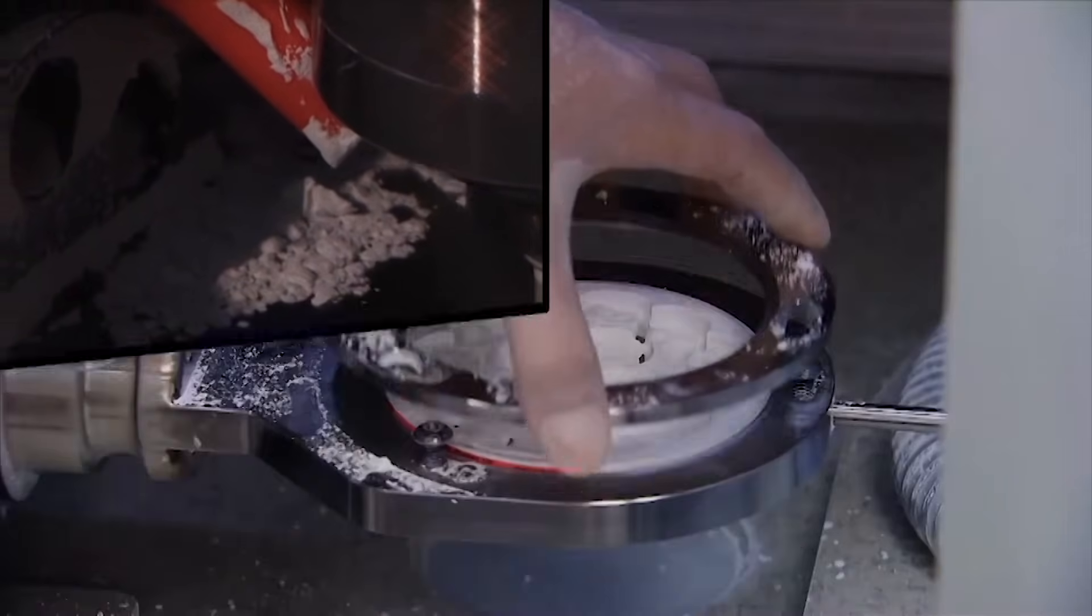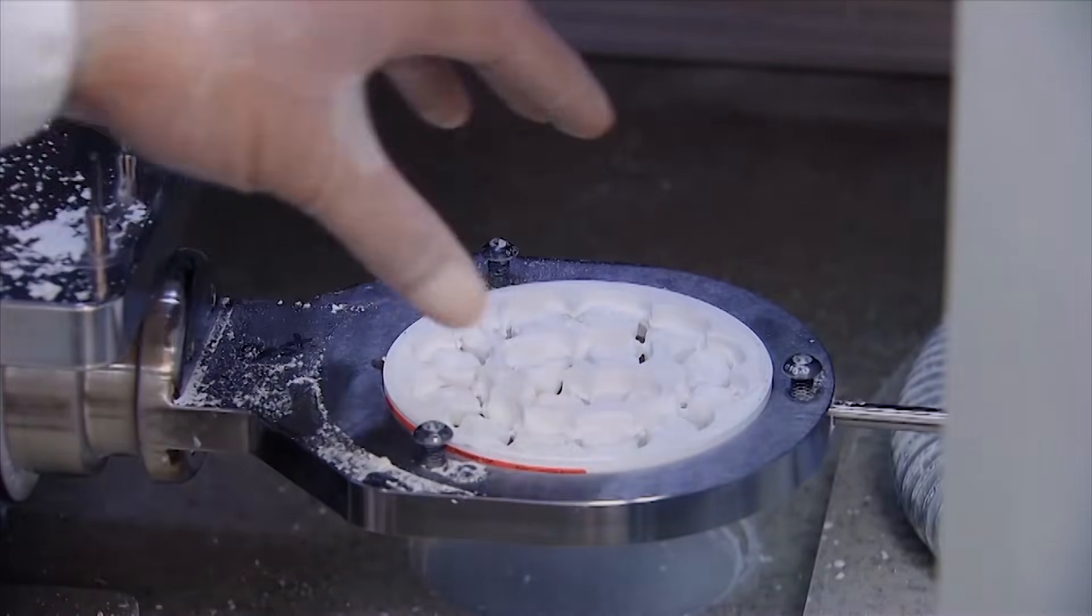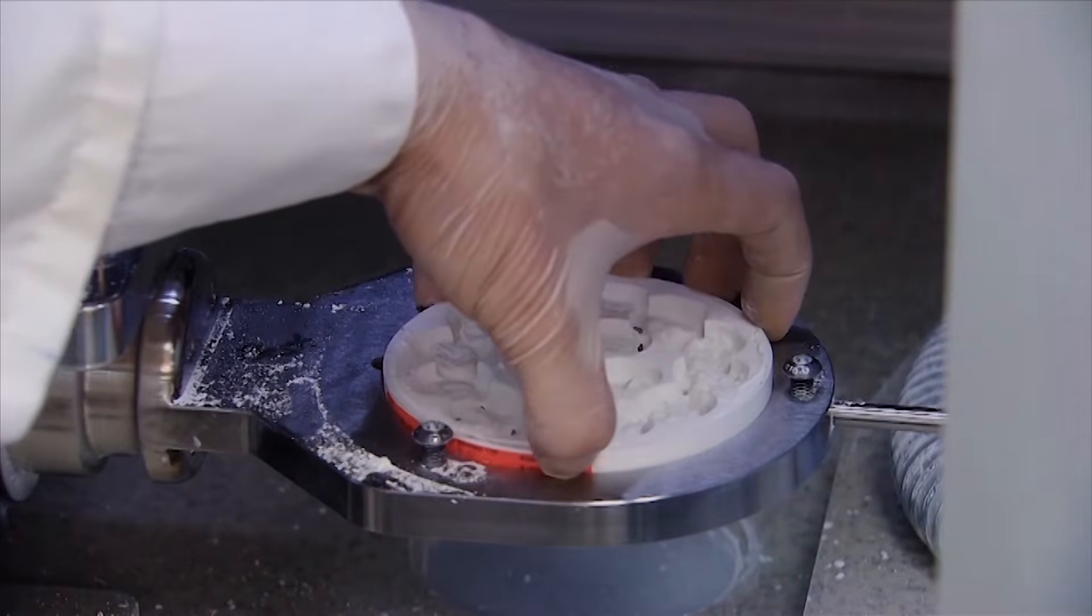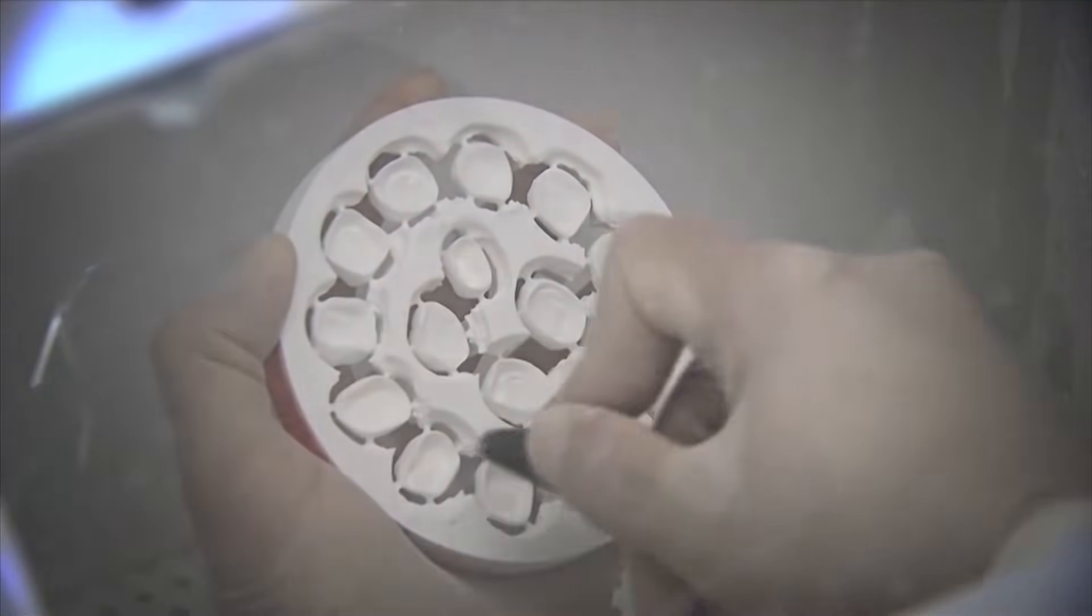So there's an exact factor for each block based on the weight and density of the zirconia. Once that's been measured, that's what that barcode tells the milling machine, so it knows exactly how much bigger to make those crowns. You can see they look huge.